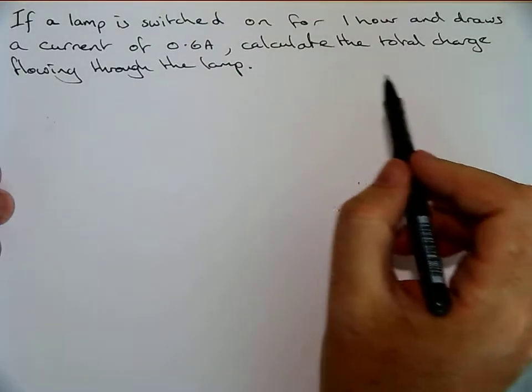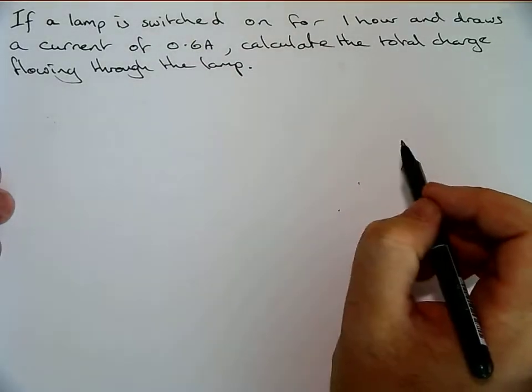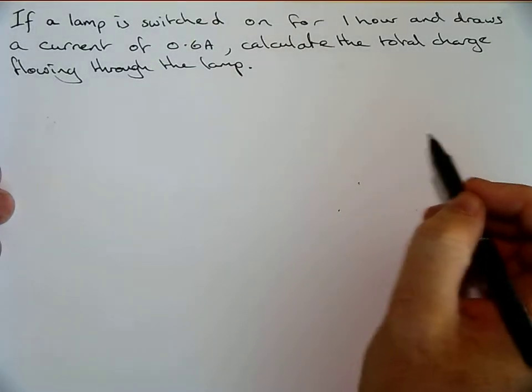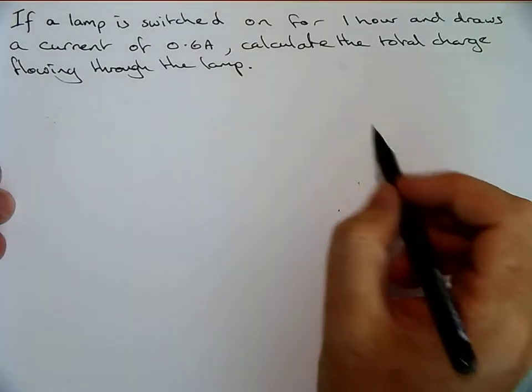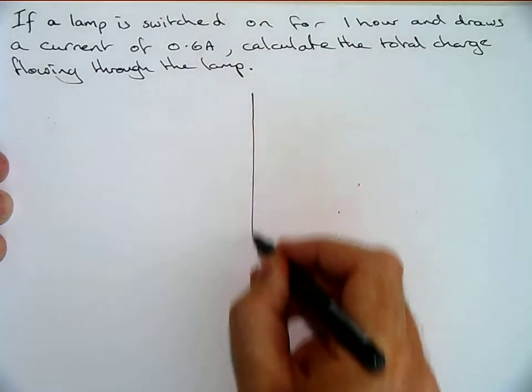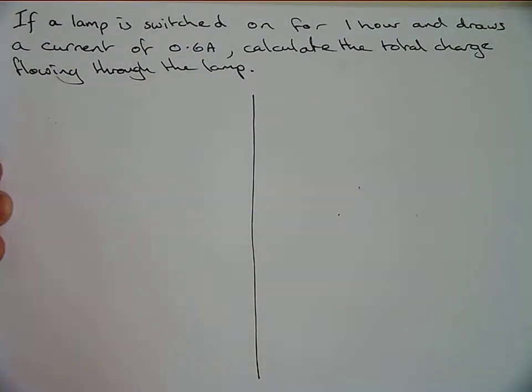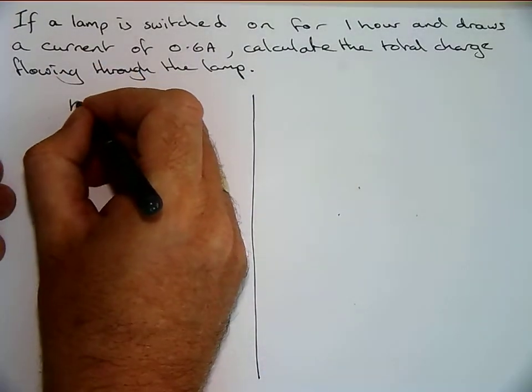If a lamp is switched on for one hour and draws a current of 0.6 amps, calculate the total charge going through the lamp. To solve this we're going to do our usual thing: split the page down the middle and on this half we write down what we know.